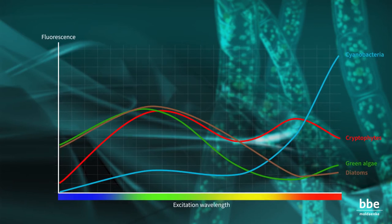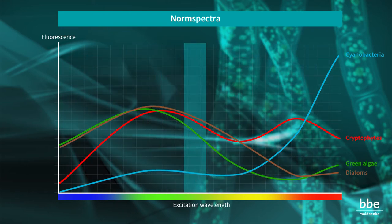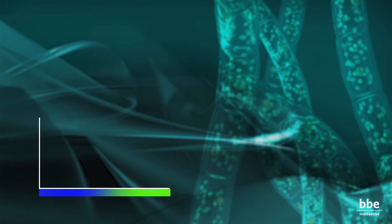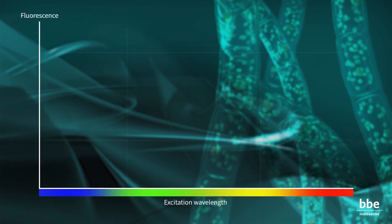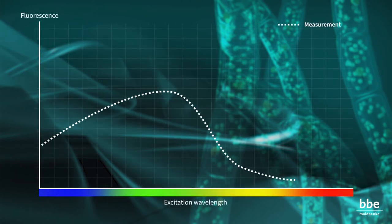Each class has a characteristic pattern of fluorescence at defined excitation wavelengths. This is termed the norm spectrum and enables the fluorometer to identify different algae in a sample. Assuming a given concentration of one algae class in the sample, the measured spectrum may look like this.